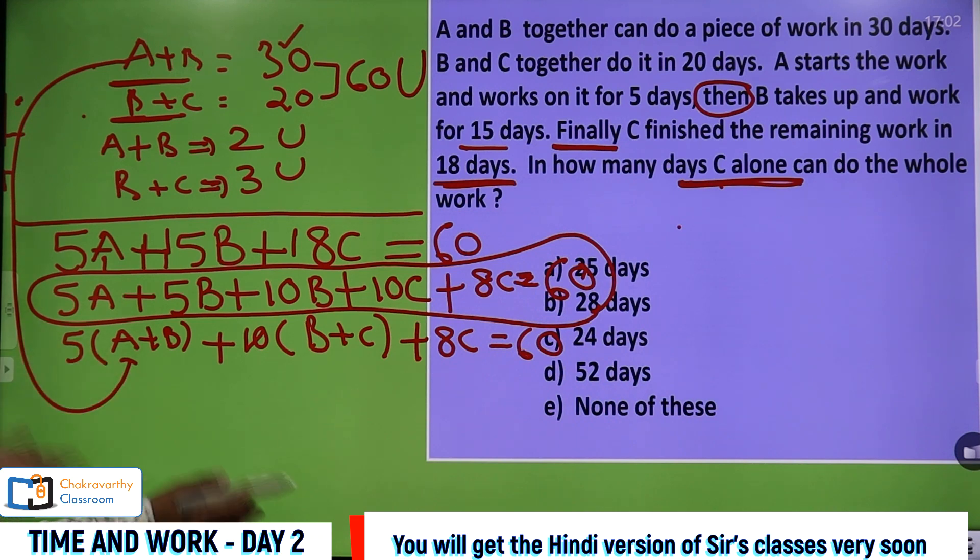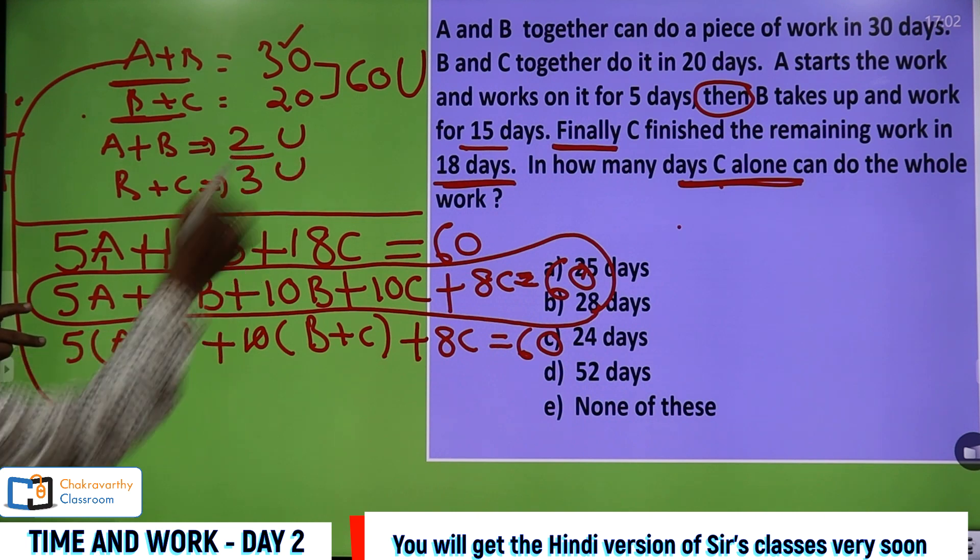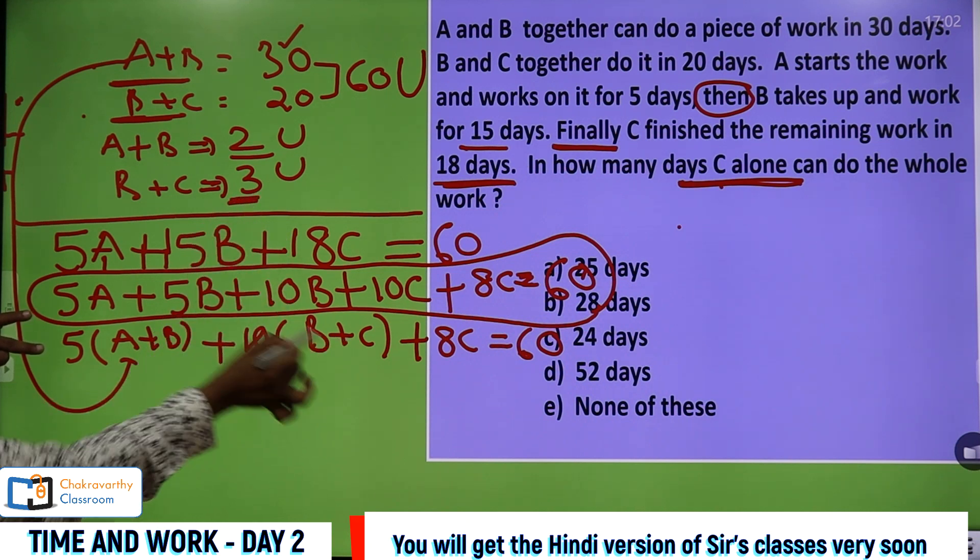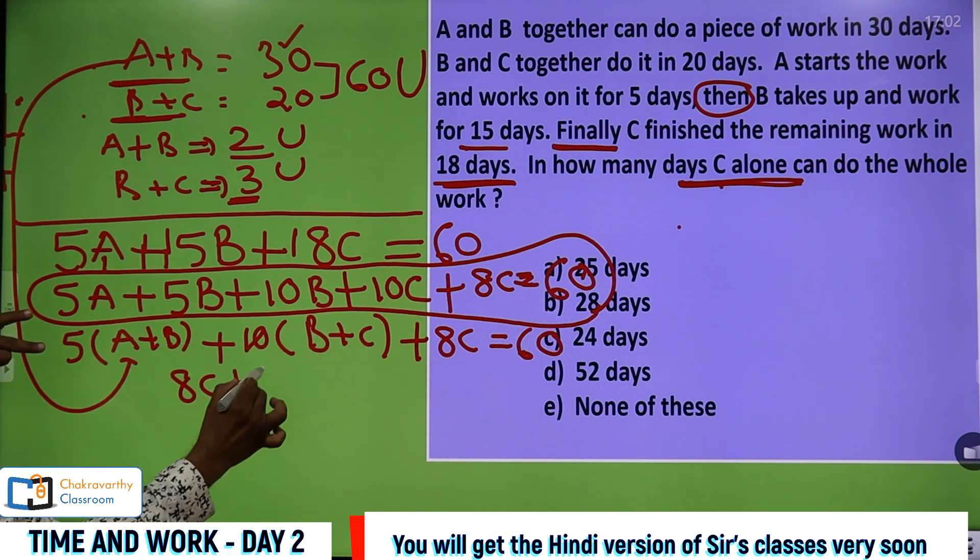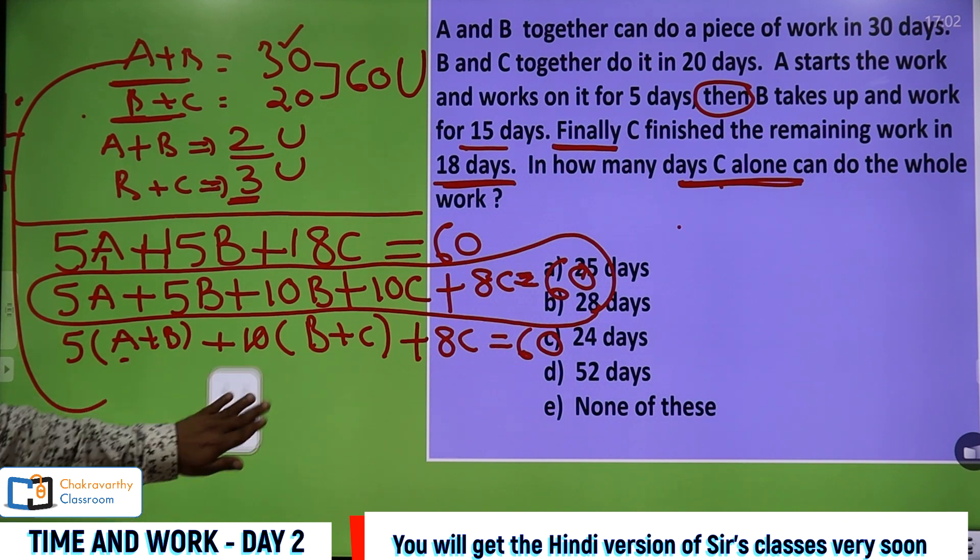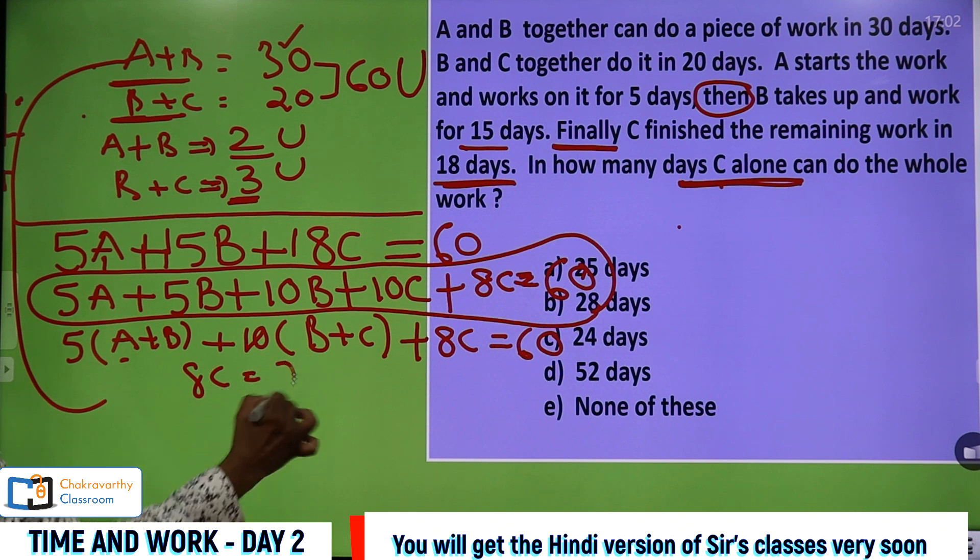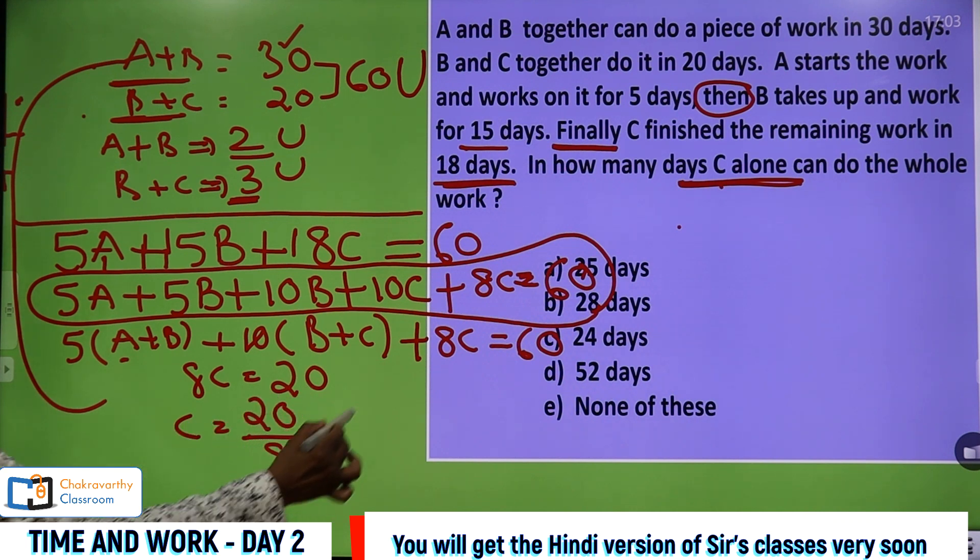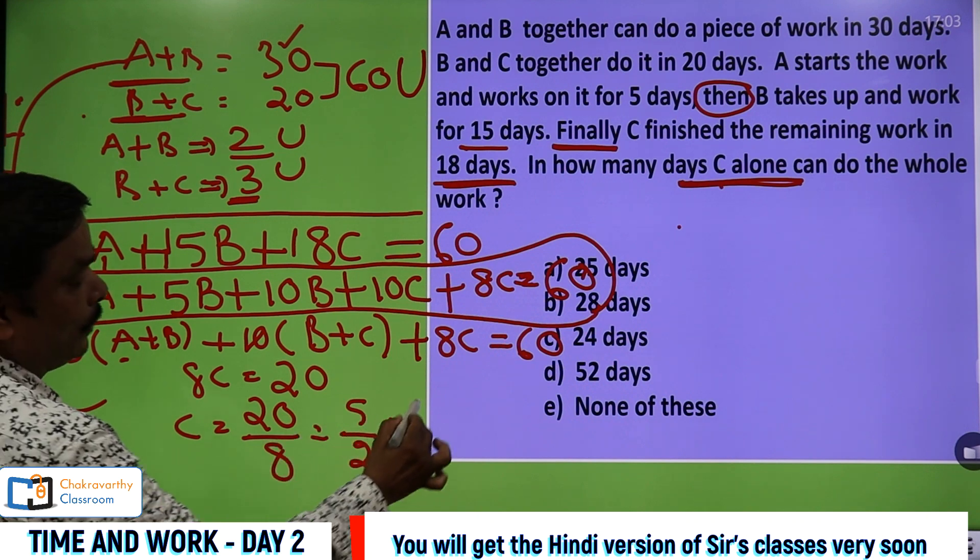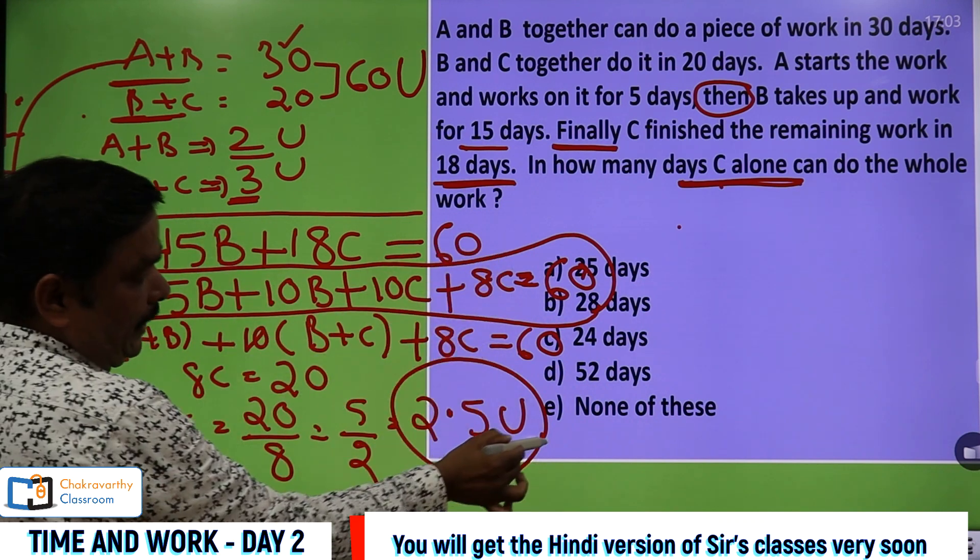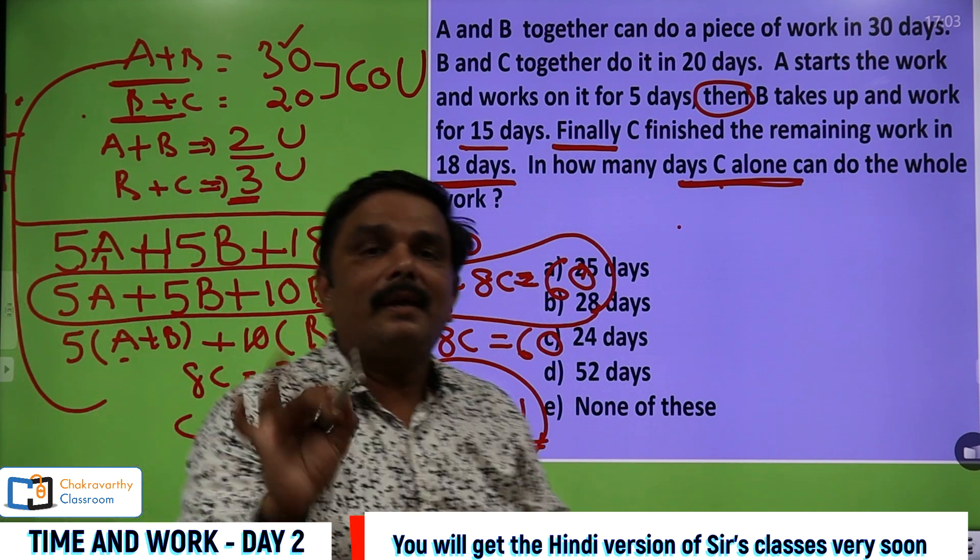Then you can easily solve the equation. Here very simply A and B's one day's work is 2 units. 2 into 5, it will become 10. Then here B plus C is 3 units, 3 into 10, that is 30. 30 plus 10, it is 40. Very clearly, 8C plus 40 is equal to 60. You take this 40 that side, that will become 20. 60 minus 40, 20. Now 8C is equal to 20. C alone can do 20 by 8 part of the work every day, per day. Just simplify this one. This is 4, 5 times and 4, 2 times. You will get 2.5 units of work per day.